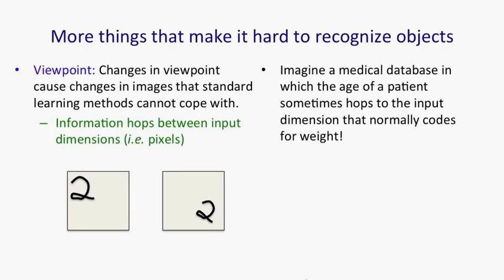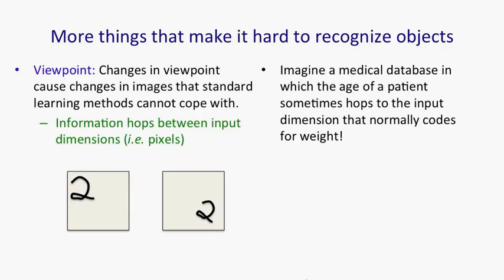Obviously, we wouldn't just carry on doing our learning. We'd try and do something to fix that. That's going to make everything go wrong. I call that phenomenon dimension hopping when information jumps from one input dimension to another. And that's what viewpoint does and it's something we need to fix. And preferably, we'd like to fix it in a systematic way.